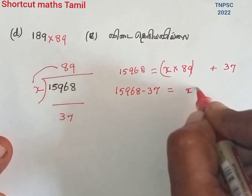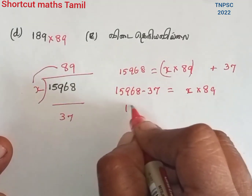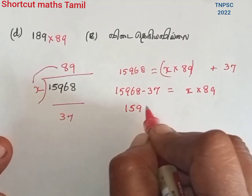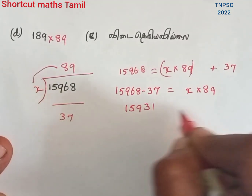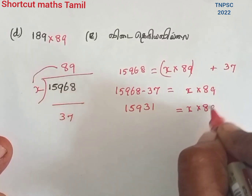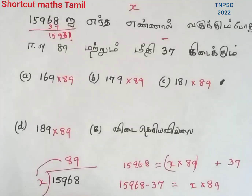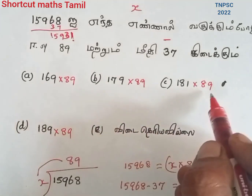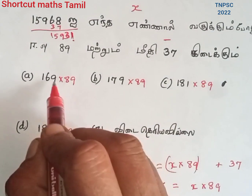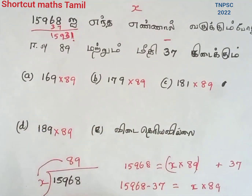This is x into 81. This is x. This is the option number. Make 75 equal.